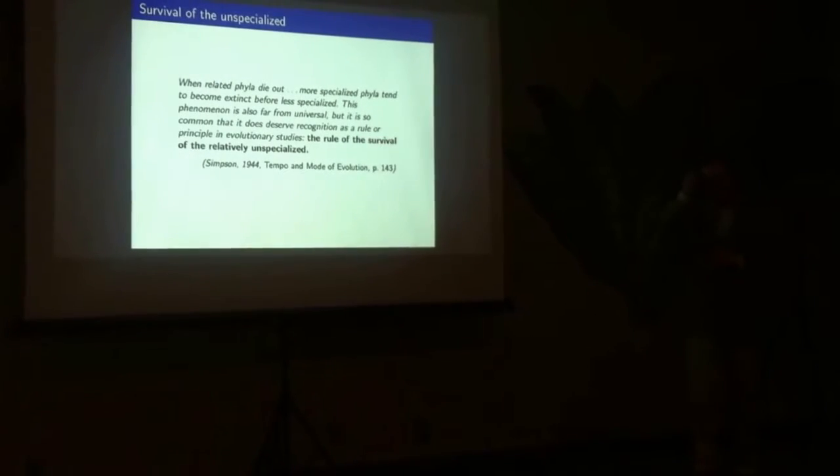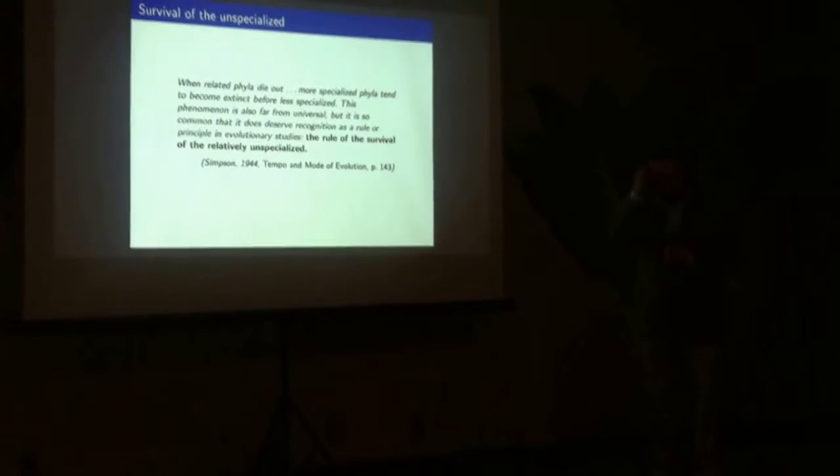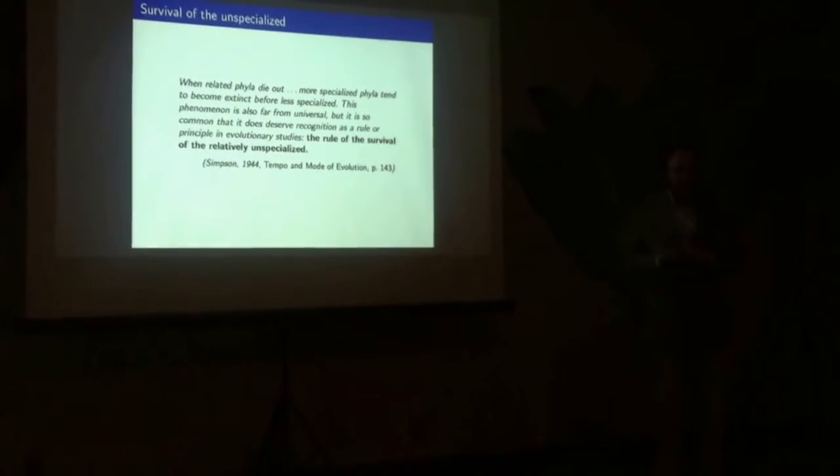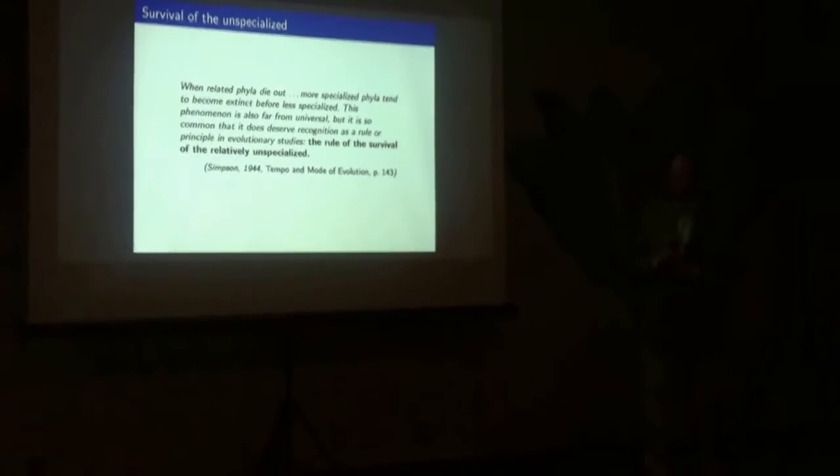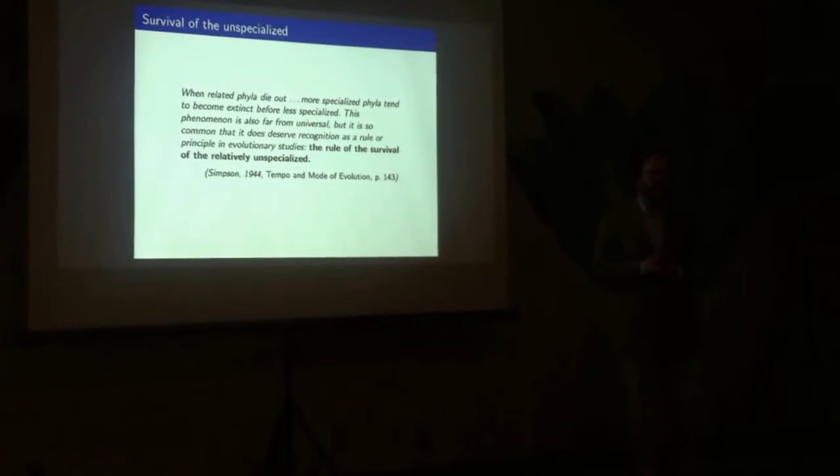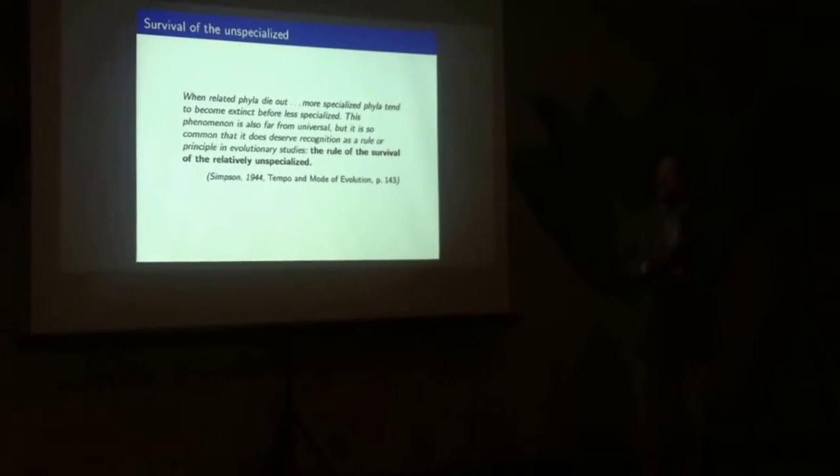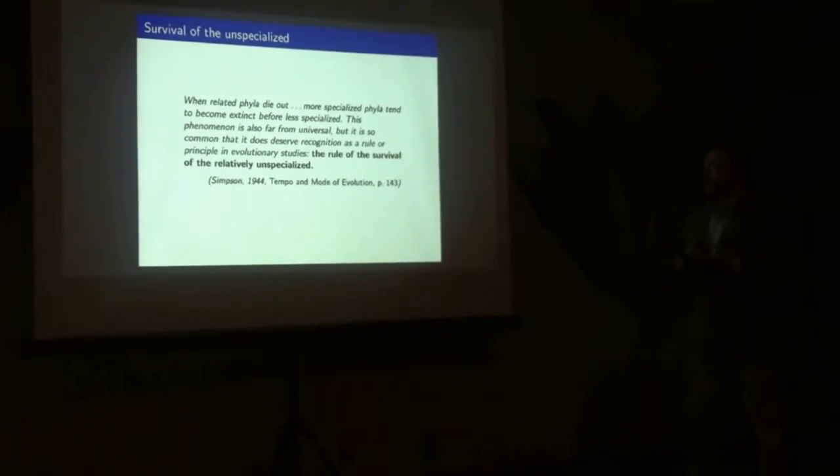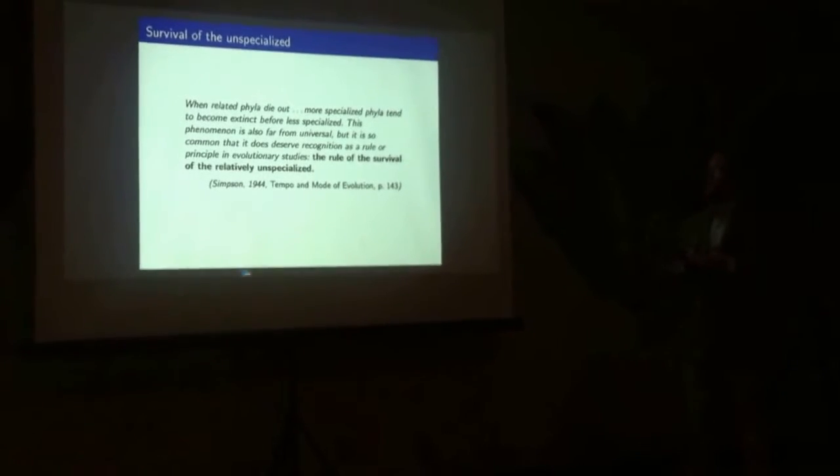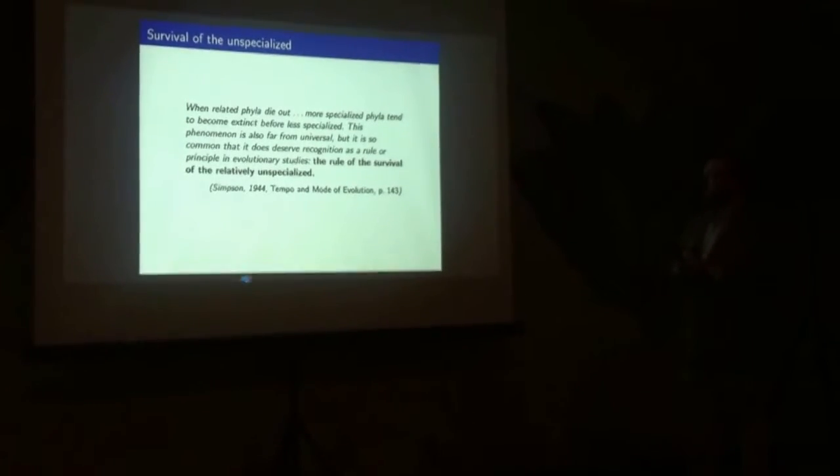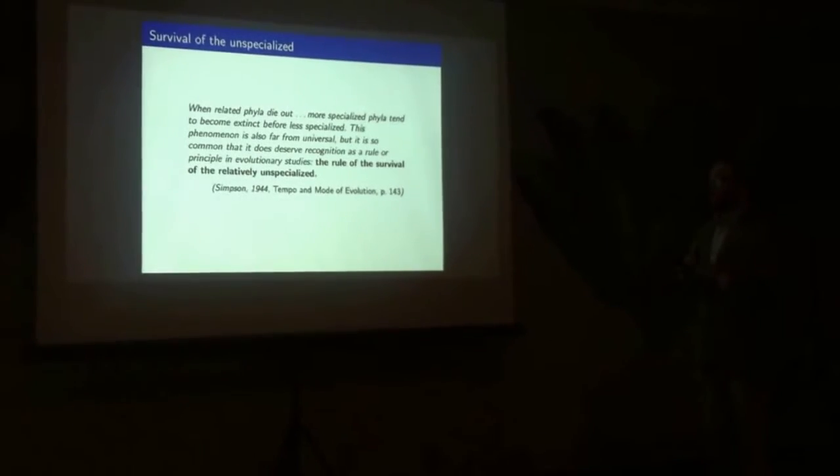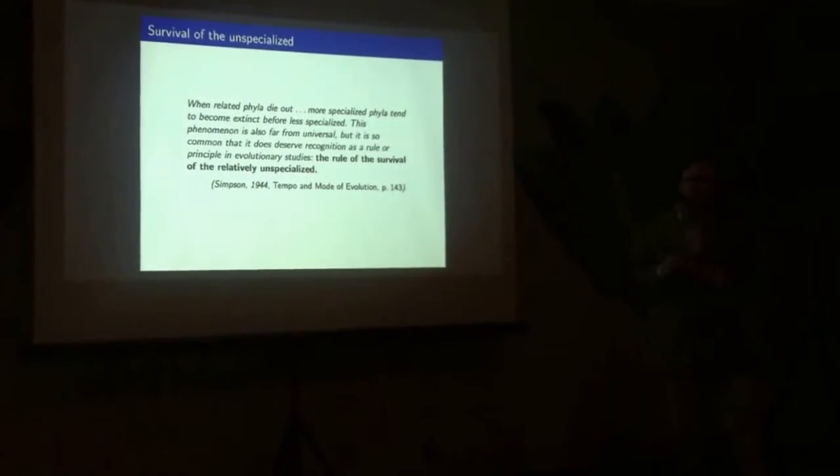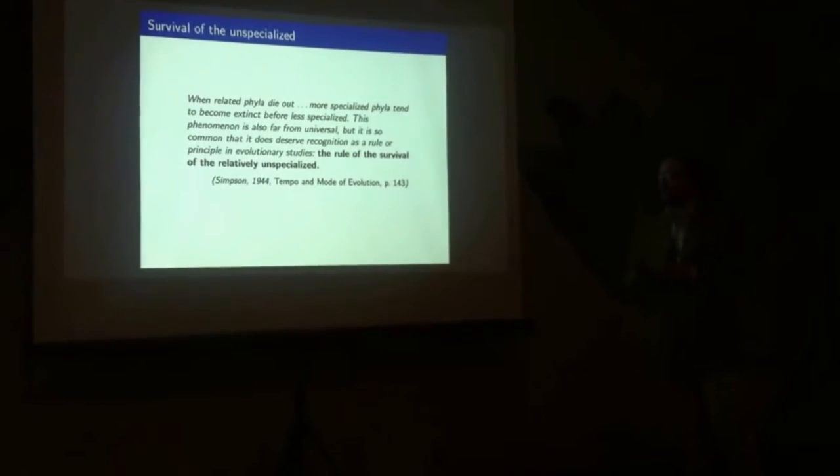For other traits in terms of extinction, it's a little lost in terms of developing major hypotheses. There's so many different traits we can look at, and really what we end up going back to, of all things, is Simpson in the 40s with his statement here: when related phyla die out, more specialized phyla tend to become extinct before less specialized. This phenomenon is also far from universal, but is so common that it does use recognition as a rule or principle in evolutionary studies. This is the rule of the survival of the unspecialized.